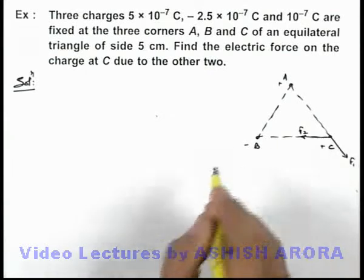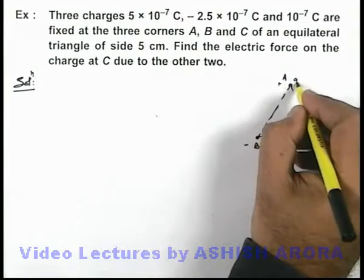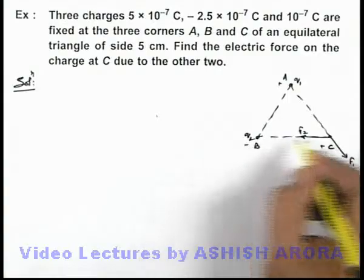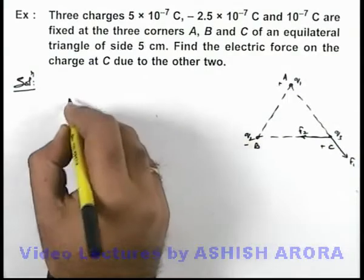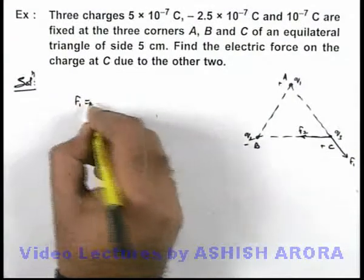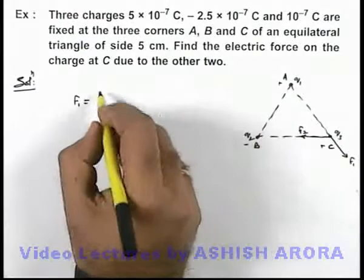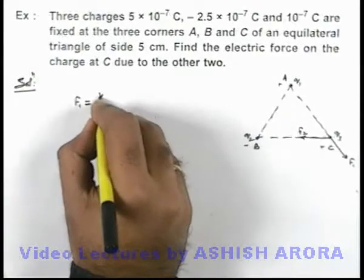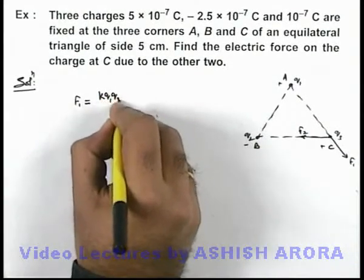Now in this situation, F₁ and F₂ we can directly calculate. If these charges are q₁, q₂, and q₃, then we can write F₁, which is the force due to A on C, can be given by Coulomb's law as k·q₁·q₃/r².